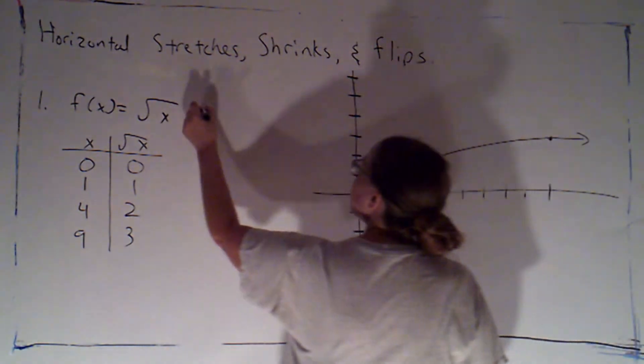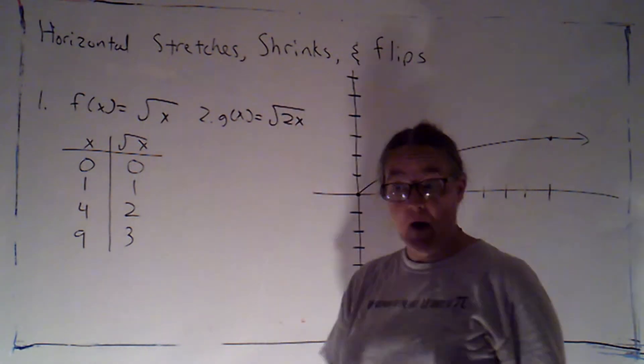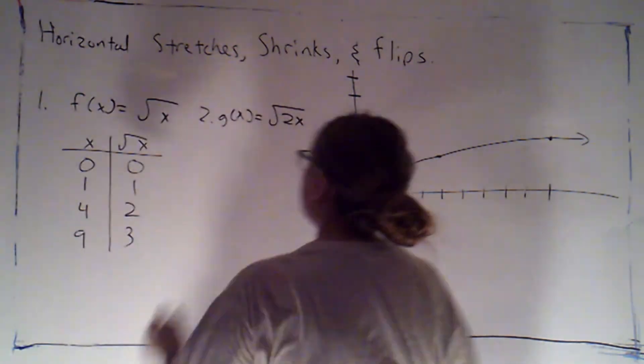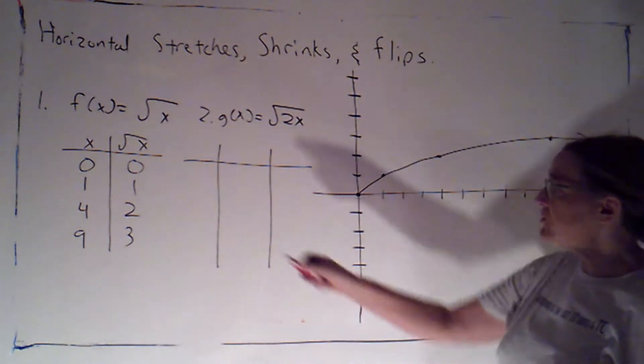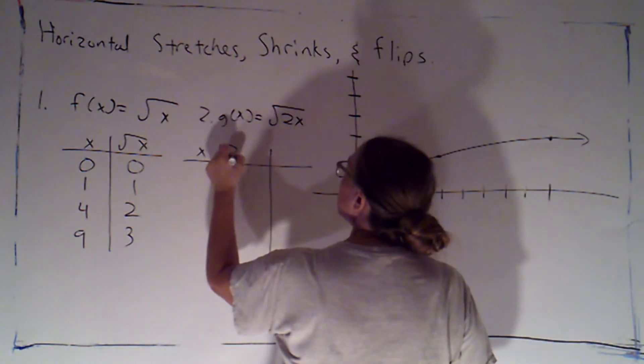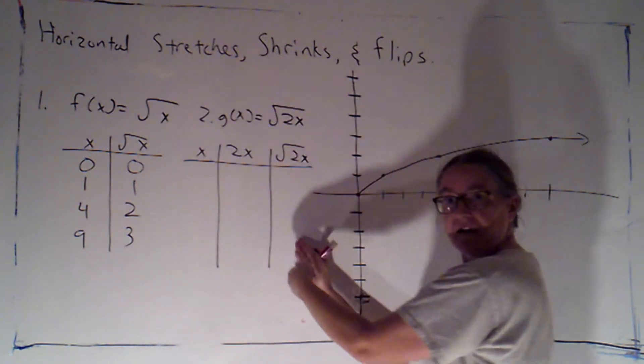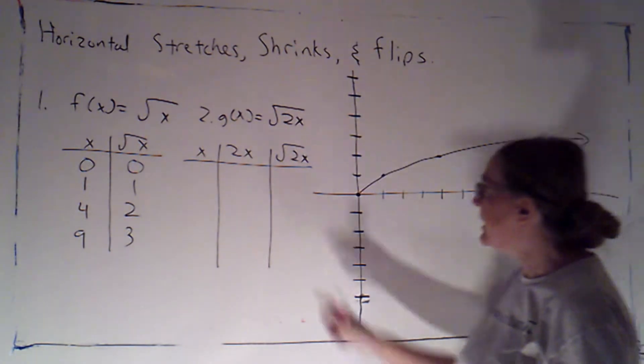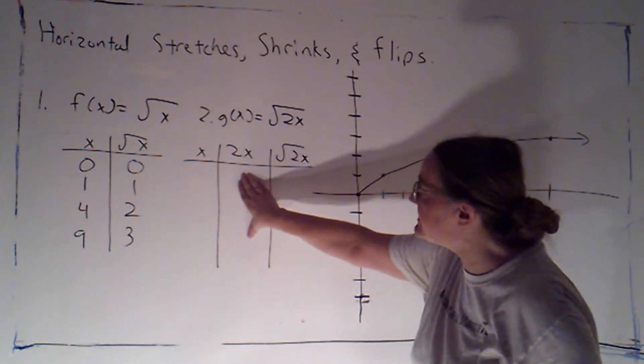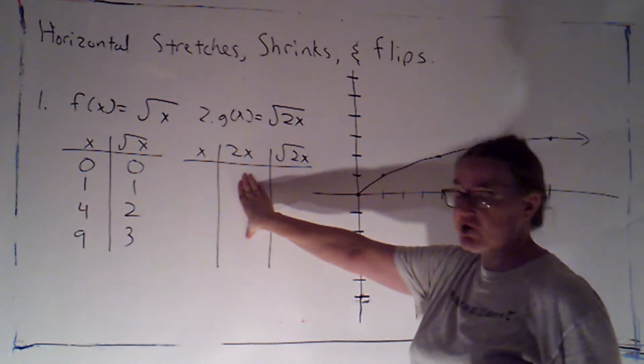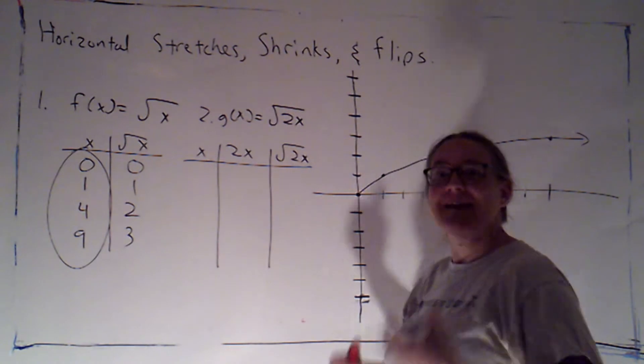Now, question 2 asks us to sketch g of x, which is the square root of 2x. And if you look on the worksheet, we're going to have a table of values with three columns now: x, 2x, and root 2x. So this first column and this last column are going to be the x and y values at the points that we're plotting. The middle column is just sort of a helper column, and the trick here is to remember that this is the thing I'm going to be plugging into the square root function.